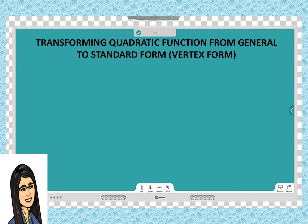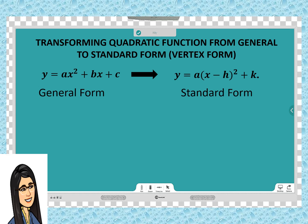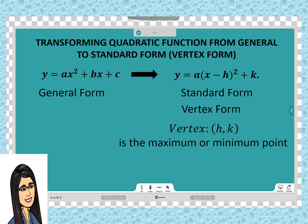This time, let us show the process of transforming quadratic function from y = ax² + bx + c, or the general form, to y = a(x - h)² + k, wherein this is also called as the standard form. The standard form is also known as vertex form because the vertex, which is represented by h and k, is the maximum or the minimum point can easily be pointed out.